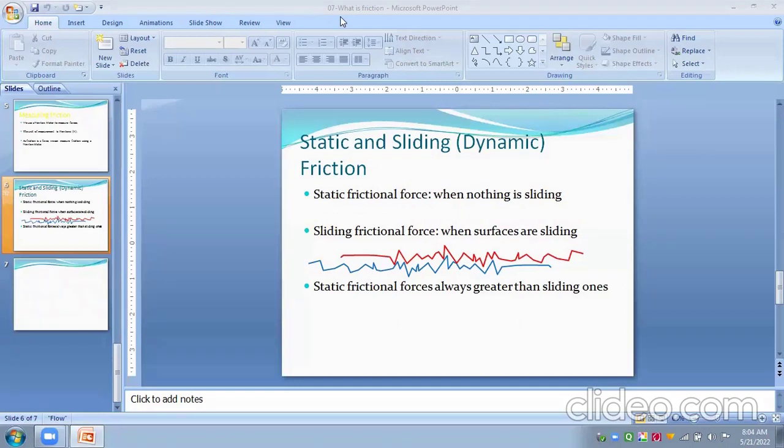How the friction is fixed less? You see here, there is an asperity contact. Suppose this is the first surface, this is another surface and there is a contact, this is the asperity contacts. If the asperity contacts are more, then the friction is more. And if the asperities are less, then the friction is also less. In static frictional force, when there is nothing sliding and sliding frictional force, there is a sliding friction when surfaces are sliding. Static frictional force is always greater than this sliding frictional forces.